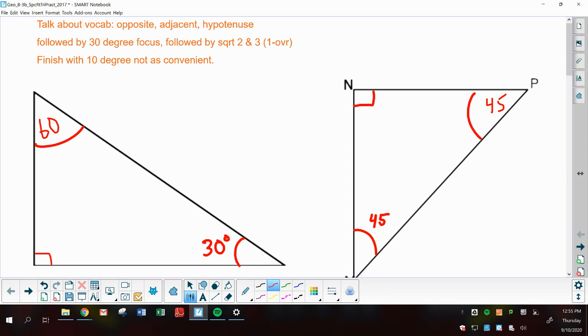A couple things that I want to really make sure you understand when you're talking vocabulary: the longest side in a right triangle is called the hypotenuse. So that's this side here and for this guy here, it's this purple side I'm kind of outlining. It's across from the right angle. It's also the longest side.